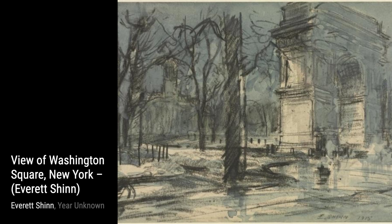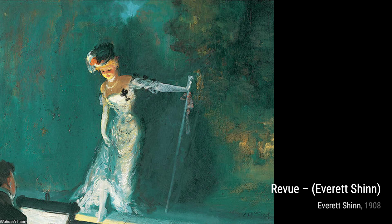Now, let's take a look at Fire on 24th Street, New York City. Shin portrays the intensity and devastation of a fire, with its fiery colors and dramatic composition.